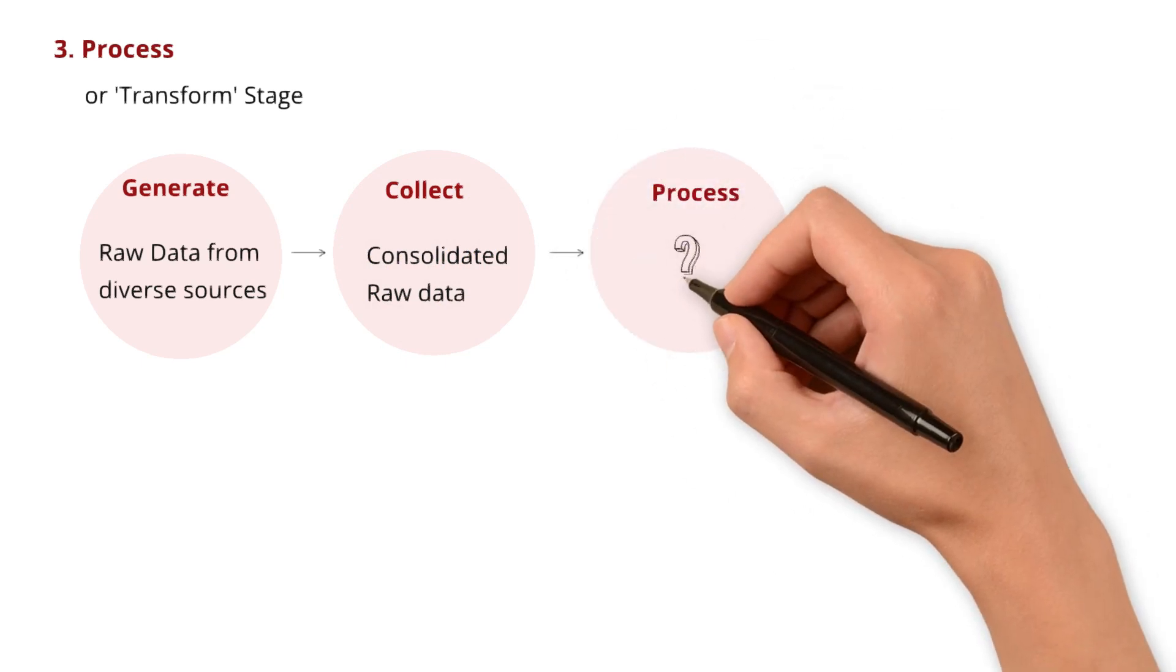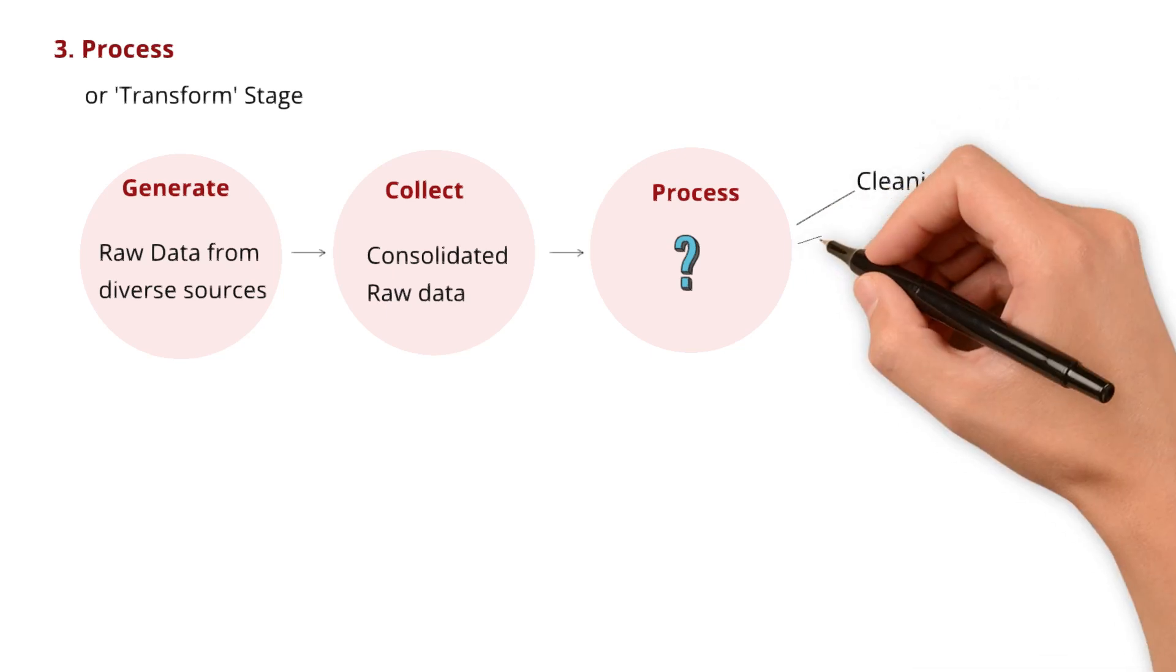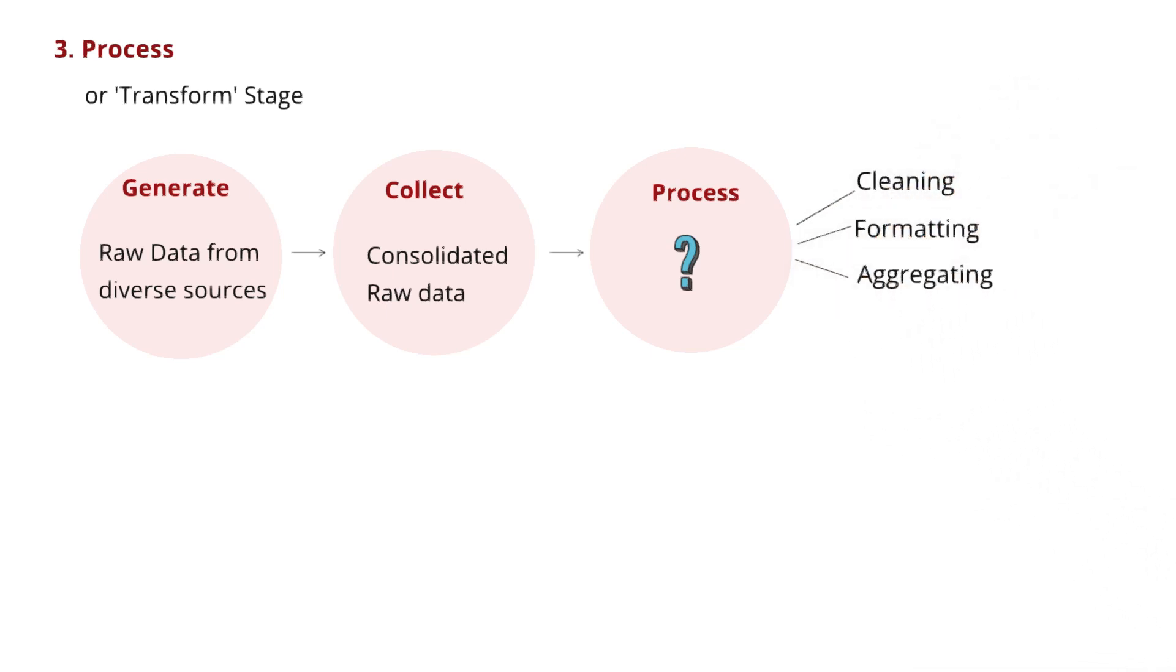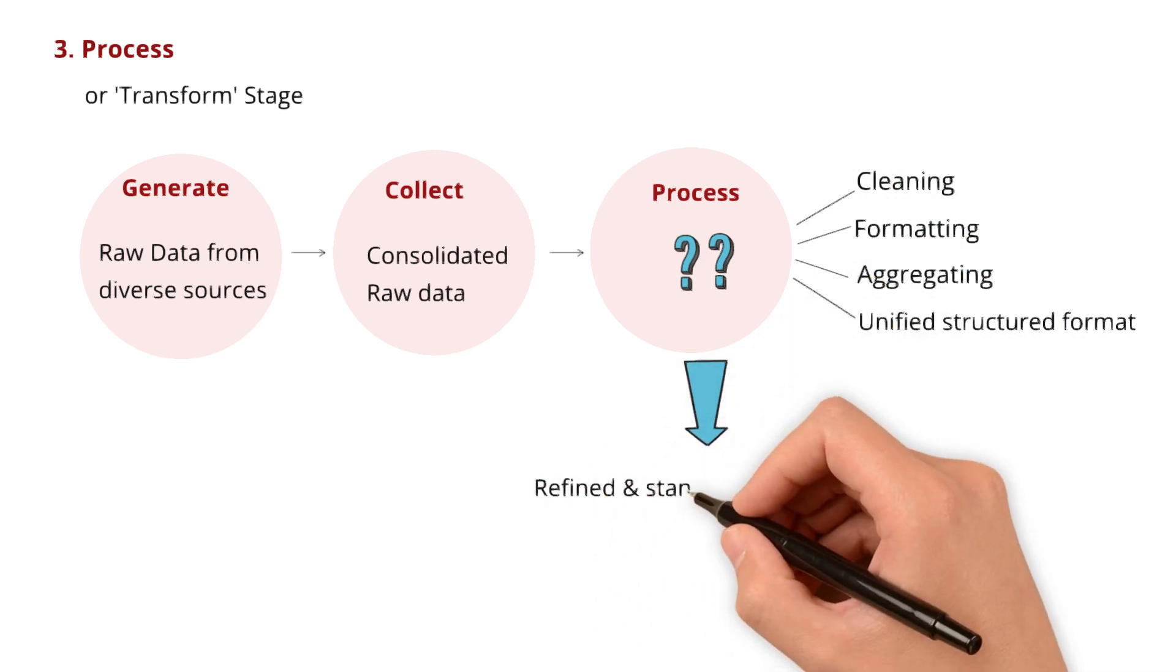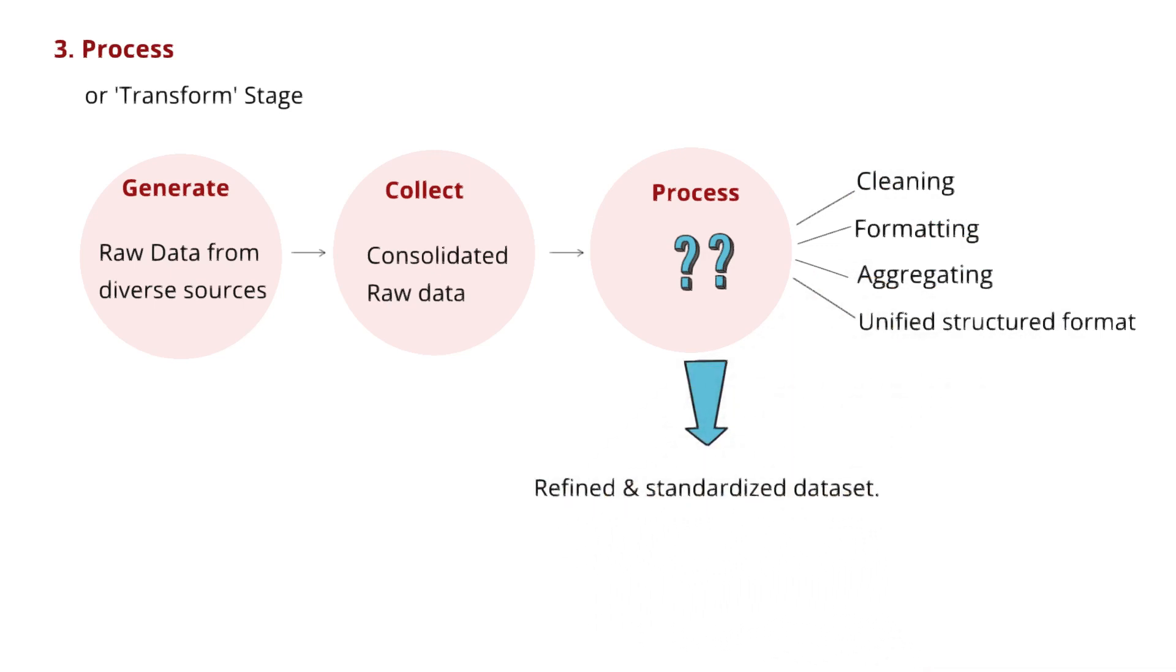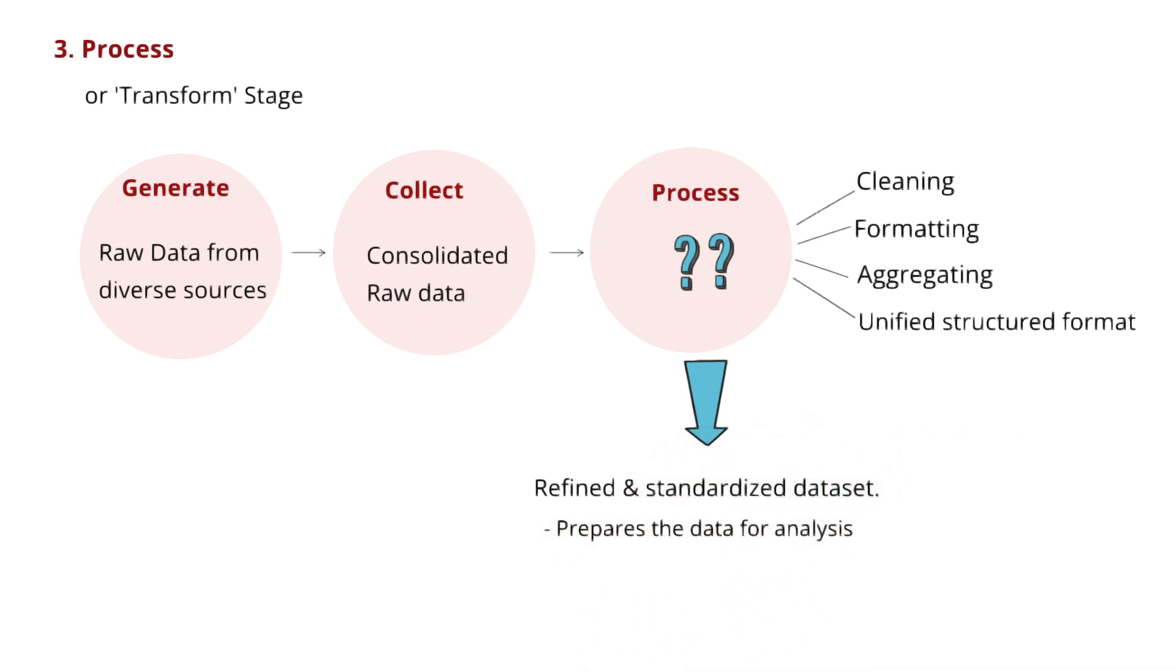Now, let's understand what happens within the process stage. Here, raw data undergoes a series of activities like cleaning, formatting, aggregating, etc. It standardizes the raw data collected from diverse sources into a unified, structured format. So, what is the output of the process stage? It's a refined and standardized dataset. With this, it prepares the data for analysis by addressing inconsistencies and errors and ensures it aligns with the desired format. Think of it as the stage that brings order to the data chaos.